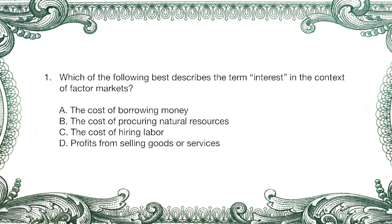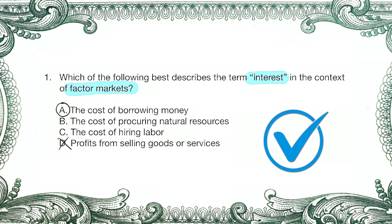In this question, we're focused on the word interest in the context of factor markets. A factor market is a term to describe the resources that businesses use to get what they need to produce their goods. Based on that, I'm eliminating option D, which is talking about getting profits. If you look at all the other options — A, B, or C — they are the cost of something, which fits the context of a factor market. Where do we most normally hear the term interest? We normally hear it on a loan — you're going to pay interest on a loan, and a loan is borrowing money. So the correct answer is option A.